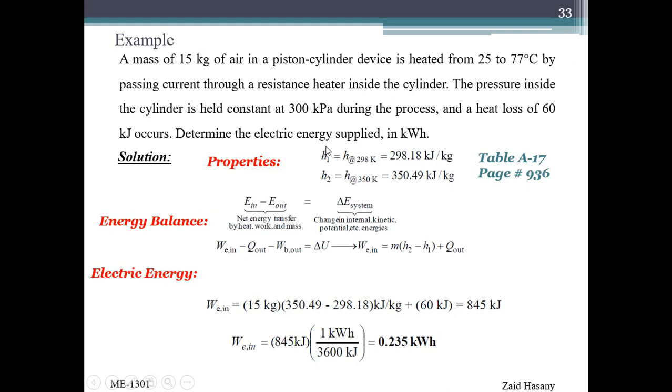First, you will find H1 which is 298.118 kJ per kg at 298 K temperature, and H2 at 350 Kelvin which is 350.49 kJ per kg. You need to convert 77 degrees Celsius to Kelvin to get 350 K. So you can find H2 at 350 Kelvin from the table.